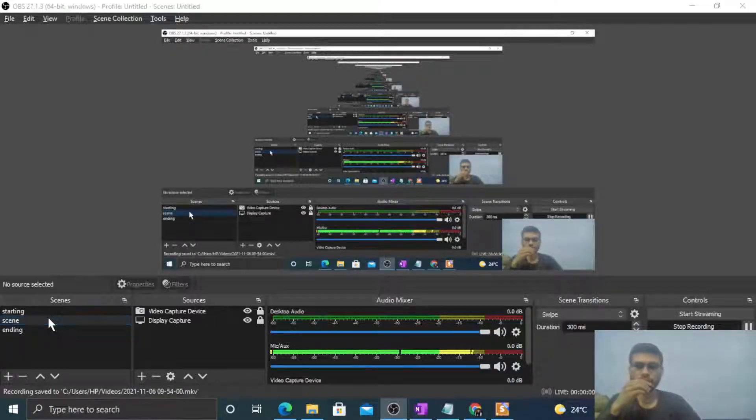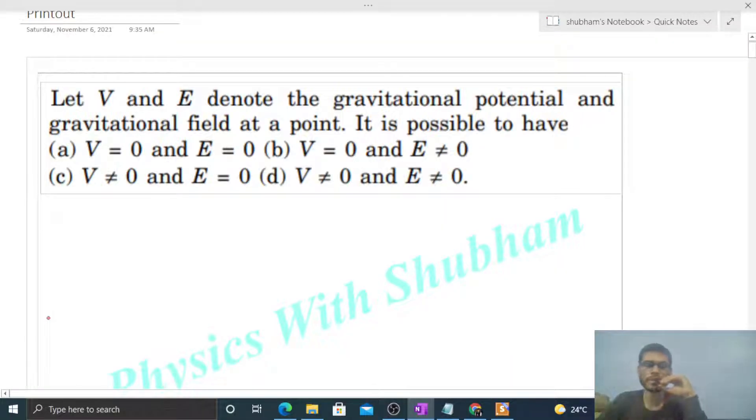Okay, hi everyone. So today let's discuss this interesting problem. It says, let V and E denote the gravitational potential and gravitational field at a point. It is possible to have... So we need to check the potential and field.